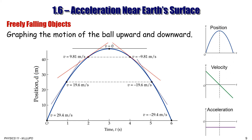From the position-time graph we can derive the velocity-time graph and acceleration-time graph. The velocity starts positive, reaches zero at maximum height, then goes negative. For the acceleration-time graph, the slope of the velocity-time graph is negative throughout. If done correctly, that slope value is −9.8 m/s², giving us a constant acceleration of −9.8 m/s² for the entire motion.